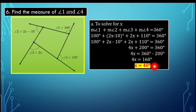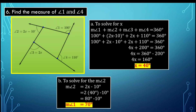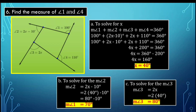So 4X plus 200 equals 360 degrees, giving X equals 40 degrees. To solve for the measure of angle 2: 2 times 40 minus 10 equals 80 minus 10, a total of 70 degrees. For the measure of angle 3: 2X equals 2 times 40, which is 80 degrees. So the measure of angle 3 is 80 degrees and the measure of angle 2 is 70 degrees. To check: 70 plus 80 plus 110 plus 100 gives 360 degrees.